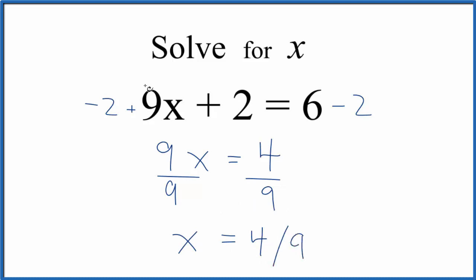So we've solved for x. In this equation, x equals 4 over 9. If you put 4 over 9 in for x, you would multiply 9 times 4 over 9 plus 2, and you would get 6. So you can always check your work with these equations.